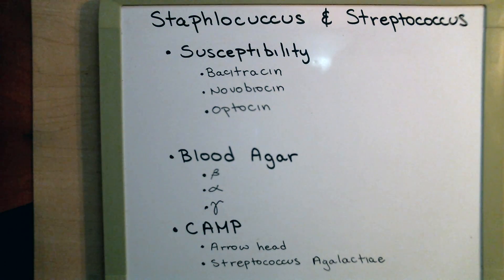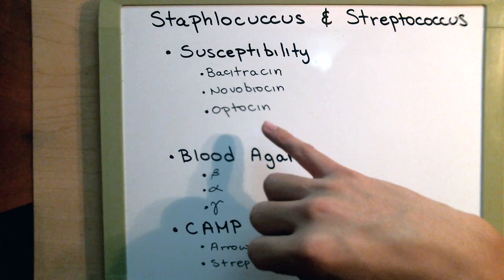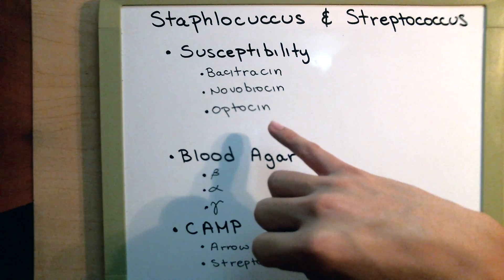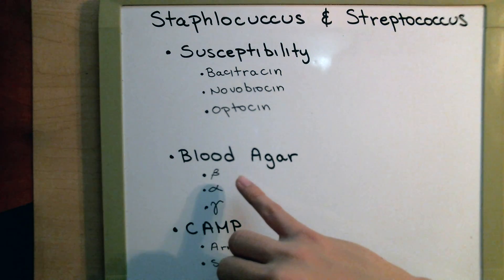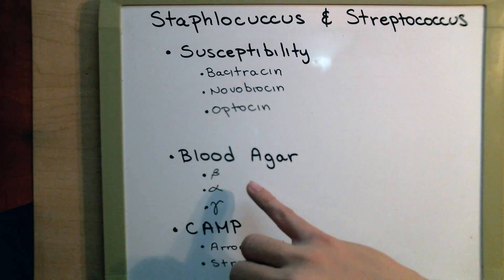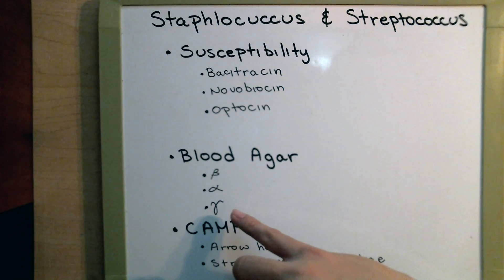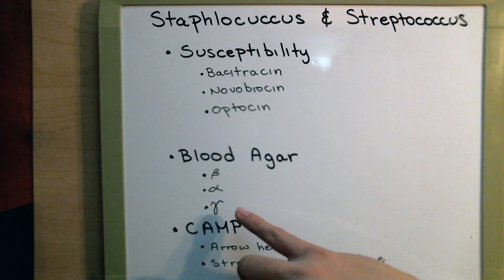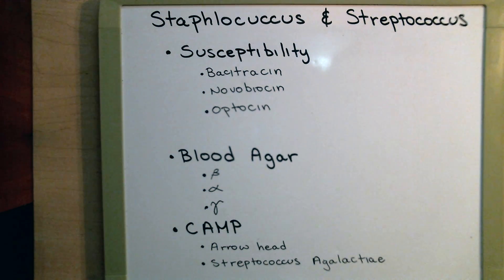Let's review. In the susceptibility test, Bacitracin interferes with bacterial cell wall synthesis. Novobiocin and Optocin both interfere with ATPase activity. On the blood agar plate: beta hemolysis is complete hemolysis with complete clearing; alpha is partial and associated with a green color; gamma has bacterial growth but no hemolysis of the red blood cells. In the CAMP test, we're looking for an arrowhead, which indicates that Streptococcus agalactiae is present, as it is the only one with a synergistic effect with Staphylococcus aureus.